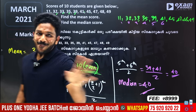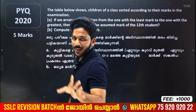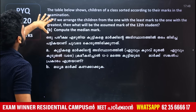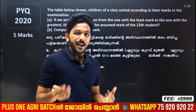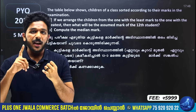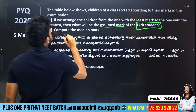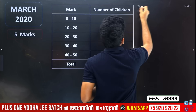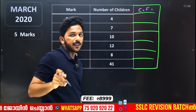Now here is another type of question — the table question. This uses a shortcut method. The table shows children of a class arranged according to their marks. You are given 5 or 6 marks. You cannot arrange them in increasing order directly. You need to find the assumed mark. There are two examples. The assumed mark is for 12 students. You call this CF — cumulative frequency.